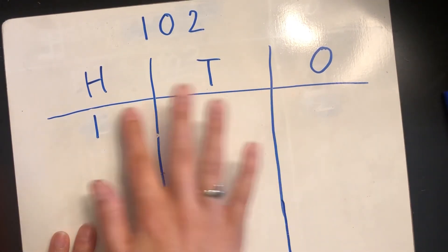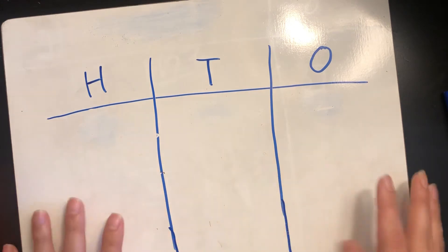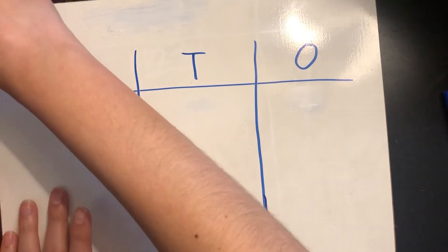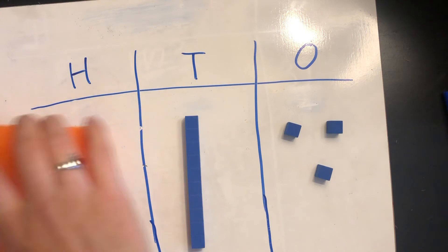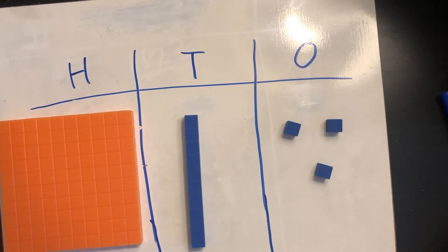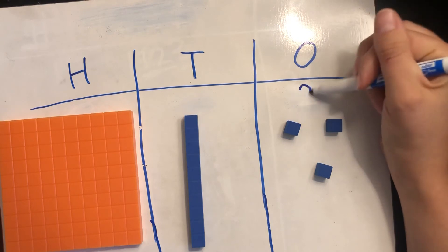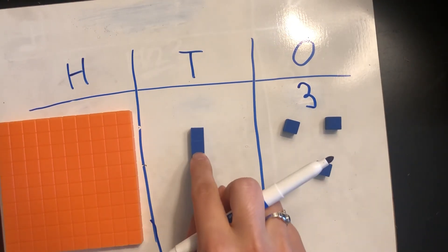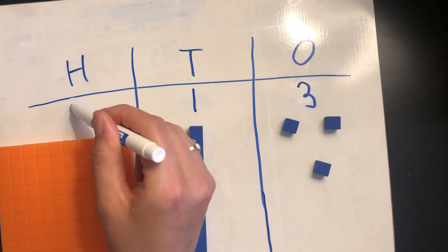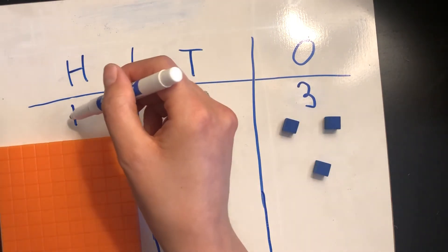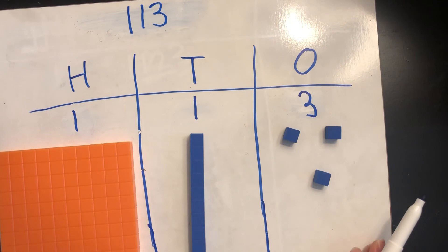This time I'm going to put the base ten blocks down and I want us to figure out what number I built. I'm going to put three ones, one ten, and one hundred. How many ones do we have? We have three ones. How many tens do we have? We have one ten. How many hundreds do we have? We have one hundred. So what number did I build? One hundred, one ten, and three ones — I built the number one hundred thirteen.